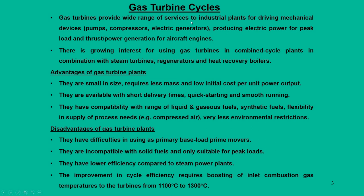Gas turbines provide a wide range of services, mainly for industrial plants, for driving mechanical devices like pumps, compressors, and electric generators. They also have the capability of producing electric power for peak load requirements. Normally, whenever steam power fails, additional power can be supplied through gas turbines to enhance peak load requirements. Another application of gas turbines that steam power plants do not have is thrust generation — all aircraft engines are powered by this gas turbine technology.